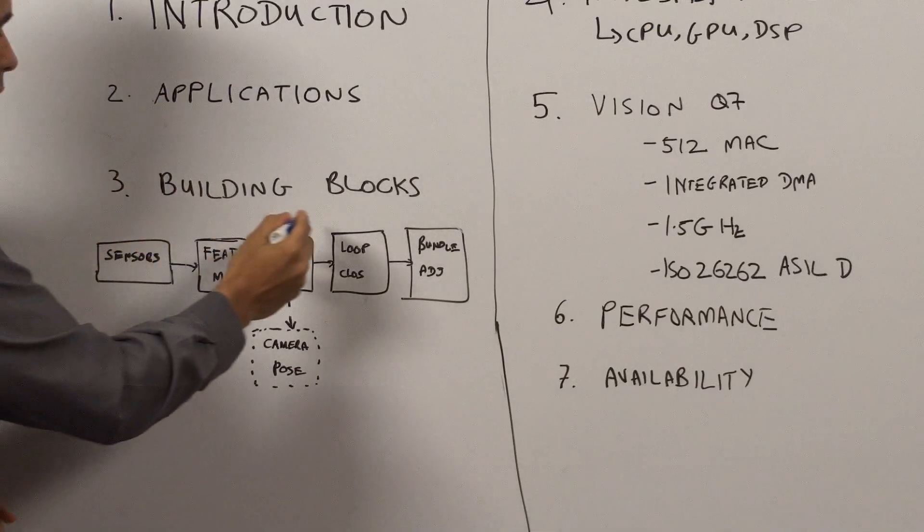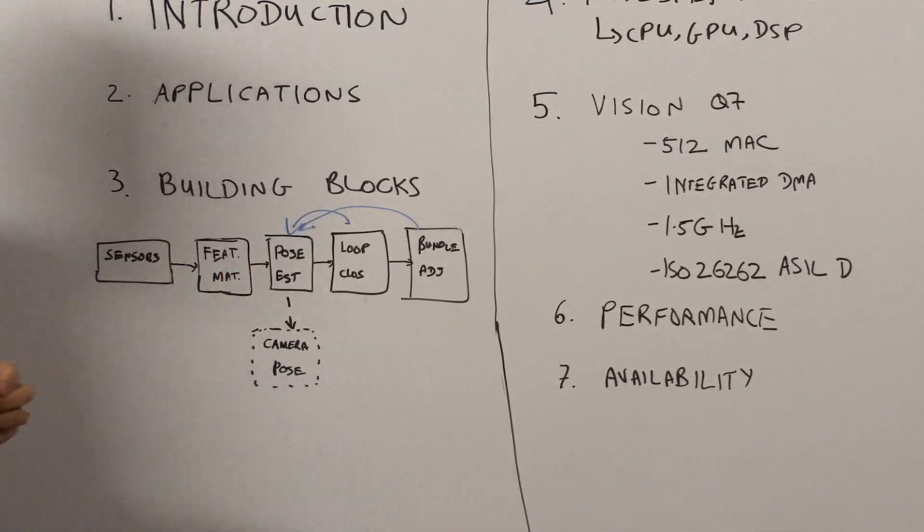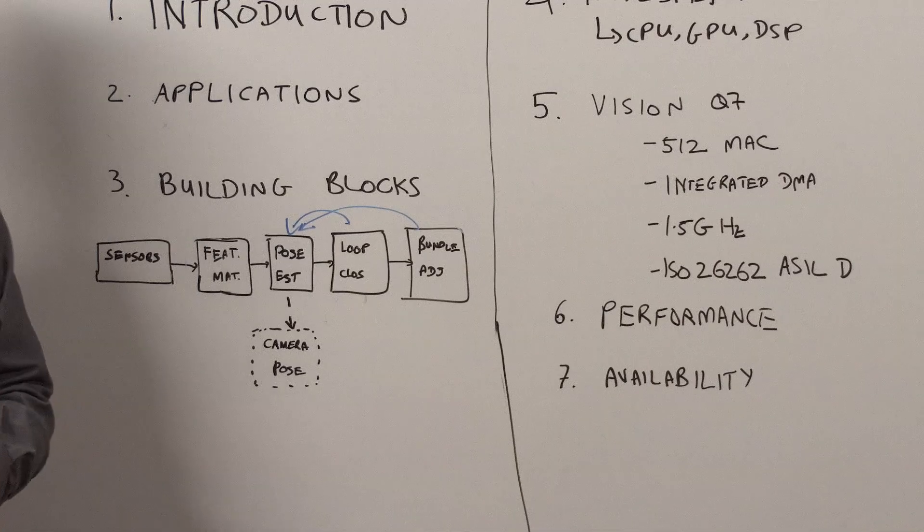Now typically, loop closure and bundle adjustment feed back into the pose estimation stage, so that way your camera pose is getting refined frequently and iteratively.